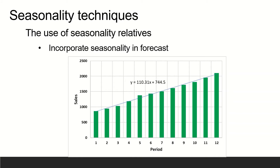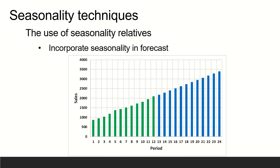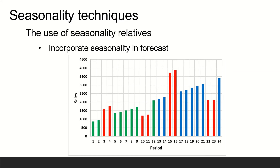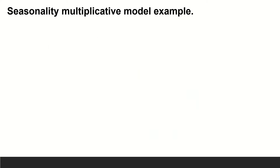Incorporating seasonality can be accomplished in this way. First, obtain trend estimates for desired periods using a trend equation. Then add seasonality to the trend estimates by multiplying these trend estimates by the corresponding seasonal relative, assuming a multiplicative model is appropriate.